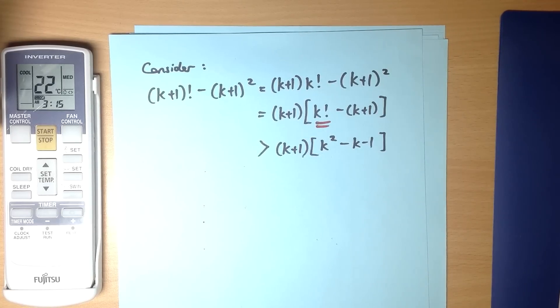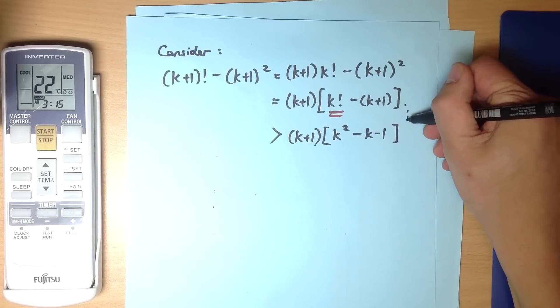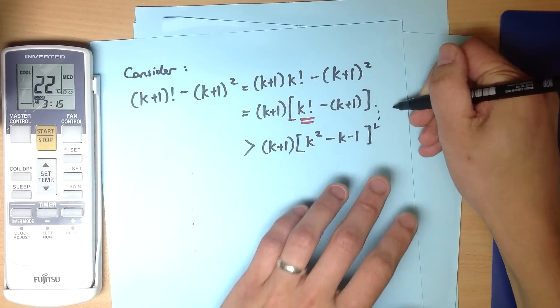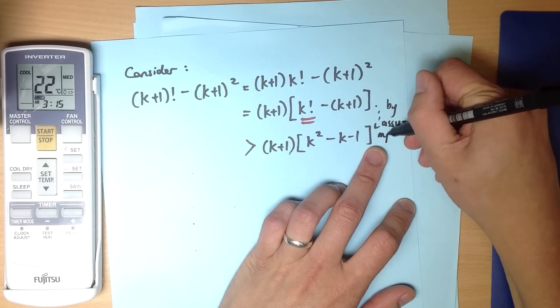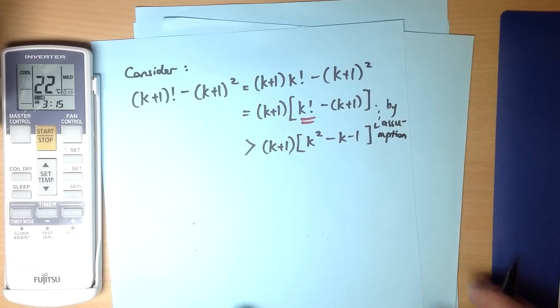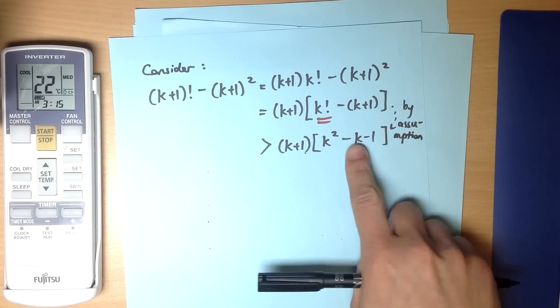What have I got here? By assumption, from this line to this line, I should really write, but I've sort of run out of space here, by assumption. I've used the fact that k factorial should be bigger than k squared, so this line is bigger than this line.